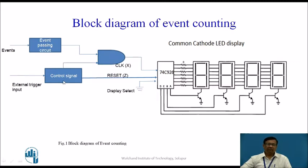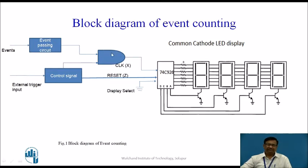Another input comes from the external trigger input through the control signal generation circuitry block. Whenever we want to start event counting, an external trigger is given. This trigger generates a logic 1 voltage, and whatever event signals are passed to the clock input of the 74C926, it starts counting. Whenever counting is over, we can give another external trigger so that this output becomes zero and events are blocked at the AND gate. Whenever we want to start a new counting process, a reset signal is generated using the control signal circuit. This is the block diagram of event counting.